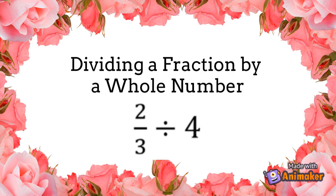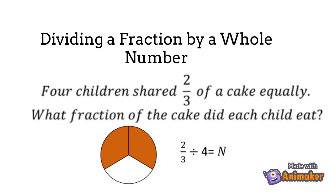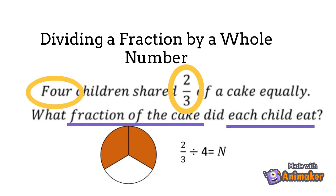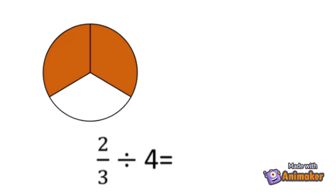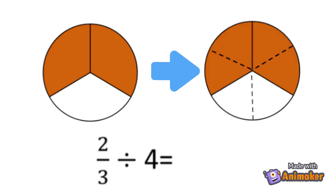Dividing a fraction by a whole number. Four children share 2 thirds of a cake equally. What fraction of the cake did each child eat? To solve the problem, we need to identify first what are given: we have 4 and 2 thirds. We are asked to find the fraction of the cake that each child ate. To visualize, we can draw 2 thirds and then divide it by 4. Using this illustration we can easily find the answer of 1 sixth.